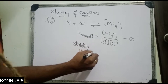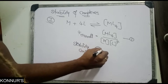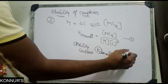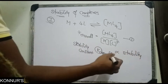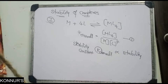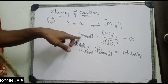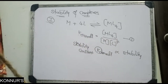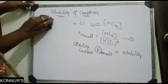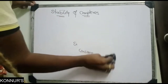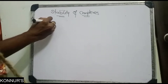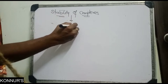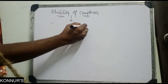If the K value increases, the K overall increases, which means stability also increases. If four values are given, the one with the highest K value has the most stability. The stability of a complex also depends on the metal's nature.